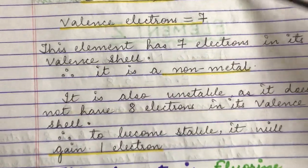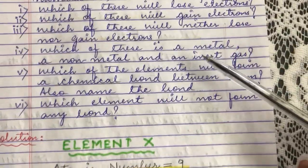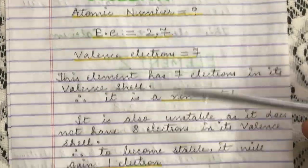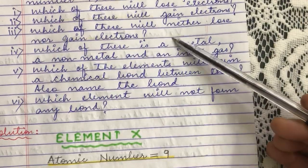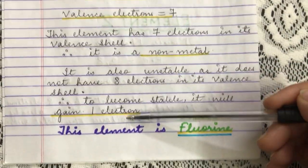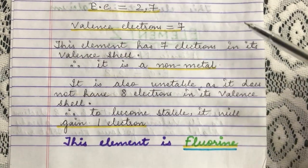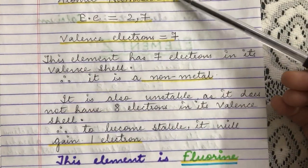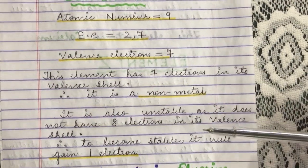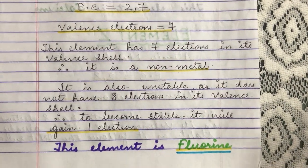This answers two parts of the question: which of these is a non-metal? It is element X. Which of these is going to gain electrons? It is also element X — element X gains 1 electron. Since it is the 9th element in the periodic table, if you have learned all 20 elements, you would identify this element as fluorine.